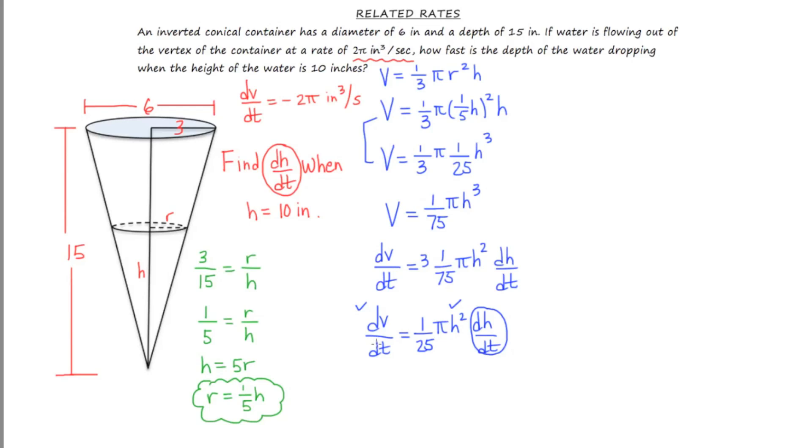So let's finish the problem. dV/dt is negative 2π. Now we're supposed to find dh/dt when h is equal to 10, so I'm going to plug that in right here - it's actually supposed to be squared. Now I'm running out of space so I'm going to come up here. The πs cancel out, 100 divided by 25 is 4, and when you're done you want to think about what your units are going to be. This is referring to the change in height over time or the change in depth. This is going to be negative one-half inches per second.